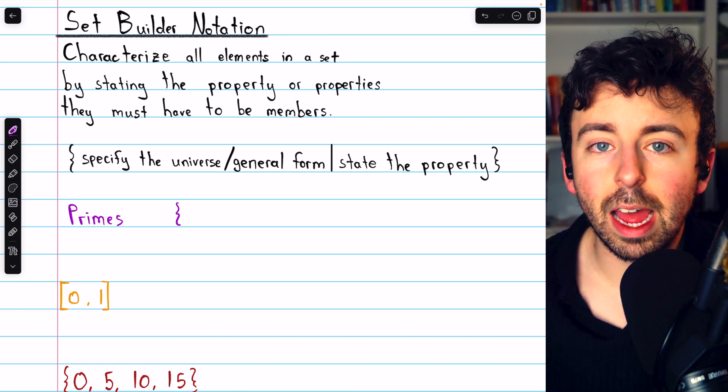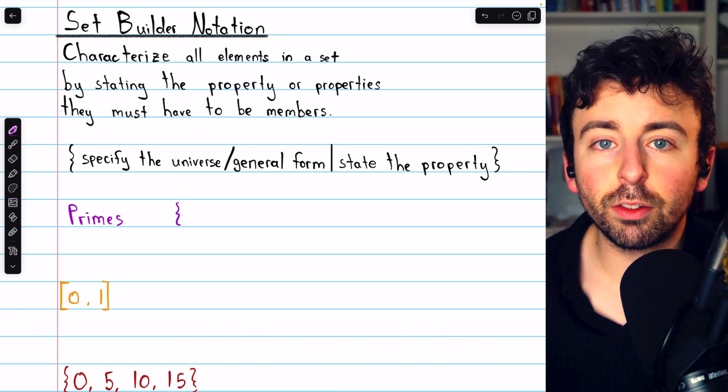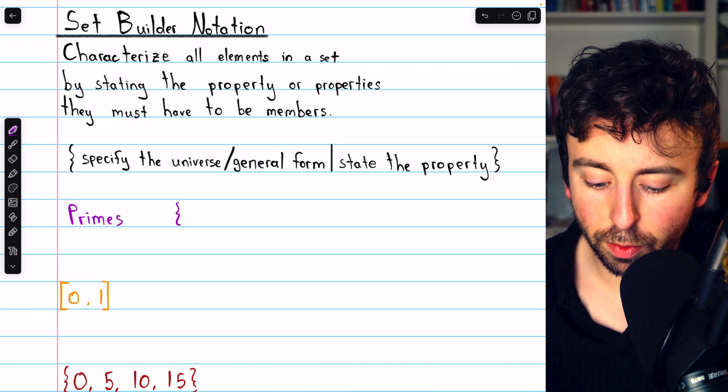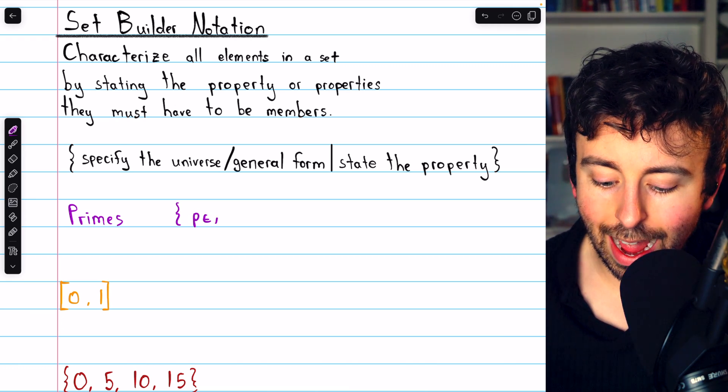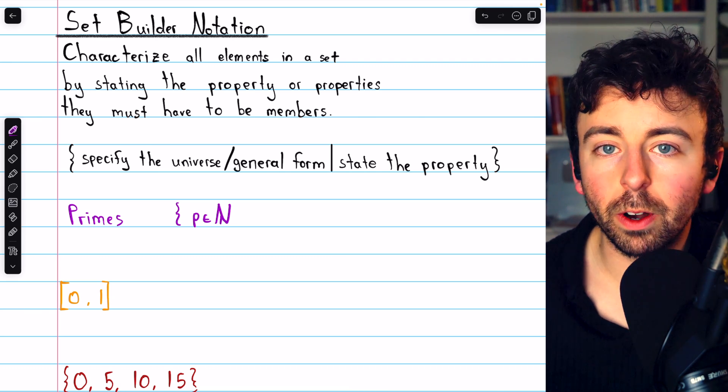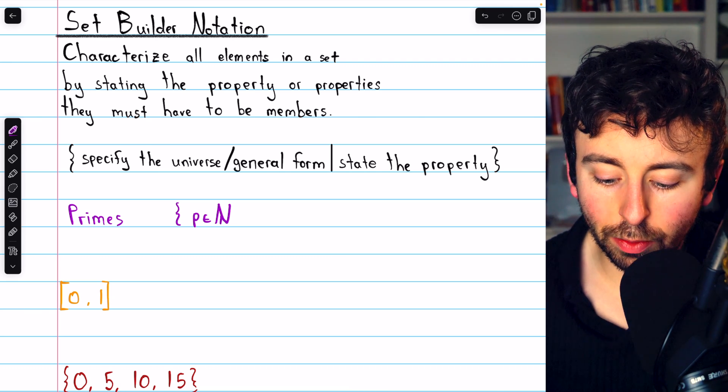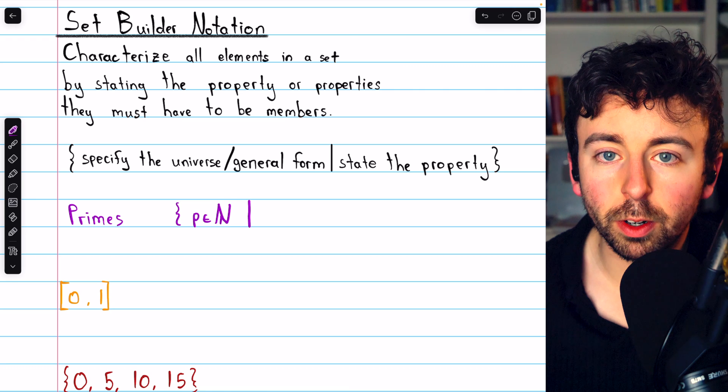We'll start by opening up our set bracket. Then, let's describe the universe that the primes come from. I might say these are the elements p that are natural numbers, so 1, 2, 3, 4, etc. And then I'll use a vertical line.